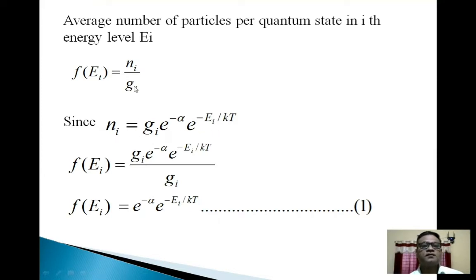Put this value of Ni here. So we can write f(Ei) = gi*e^(-α)*e^(-Ei/kT)/gi.